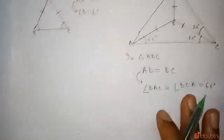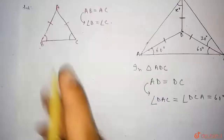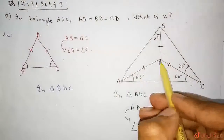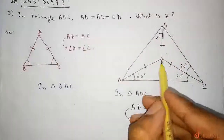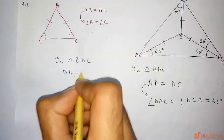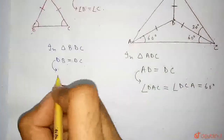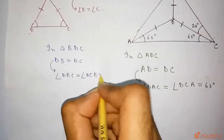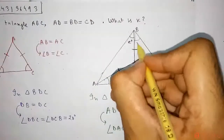In triangle BDC, we can see that DB is equal to DC. So this angle is equal to this angle. As DB is equal to DC, we can write that angle DBC is equal to angle DCB, which is equal to 20 degrees.